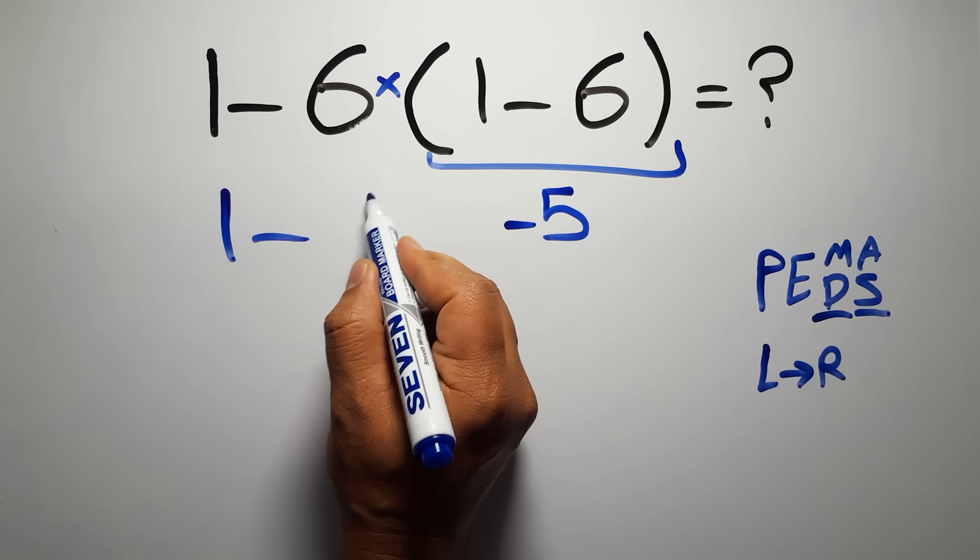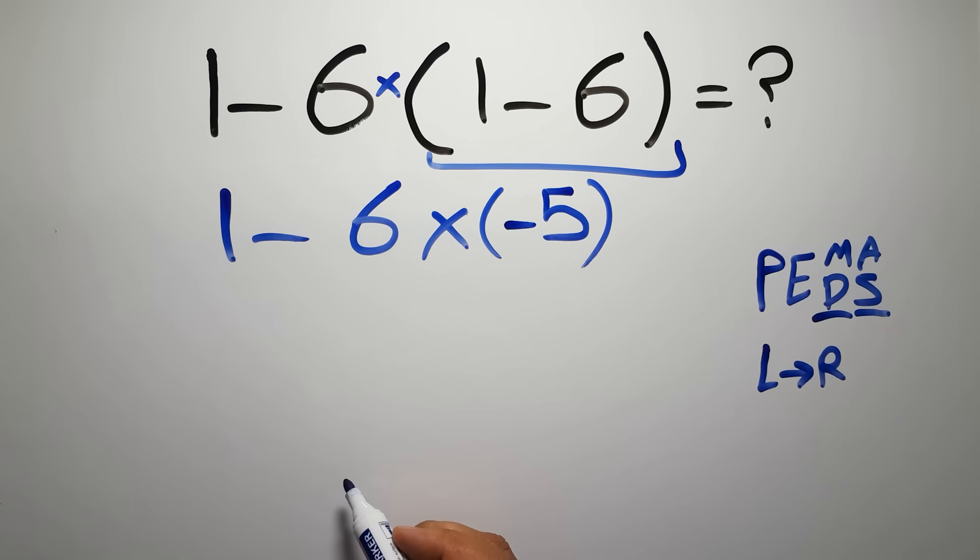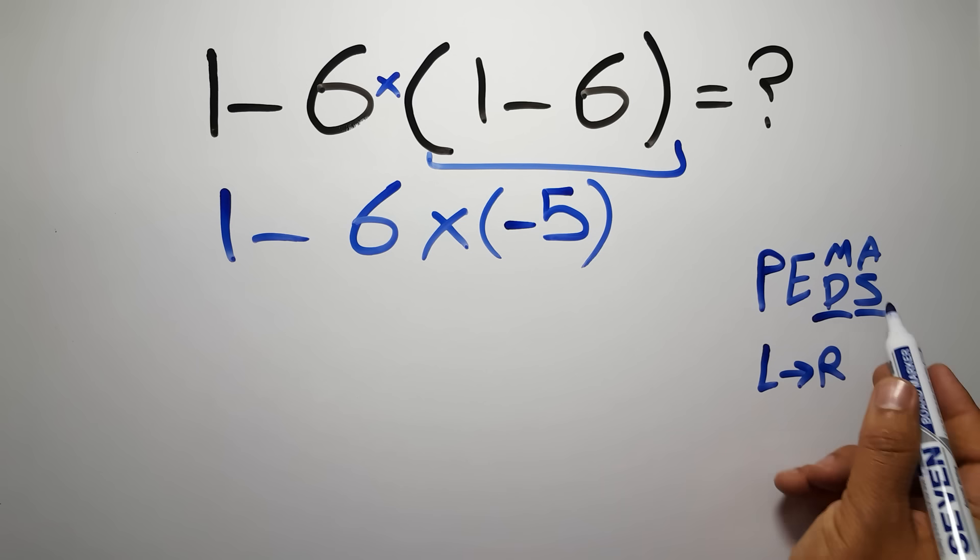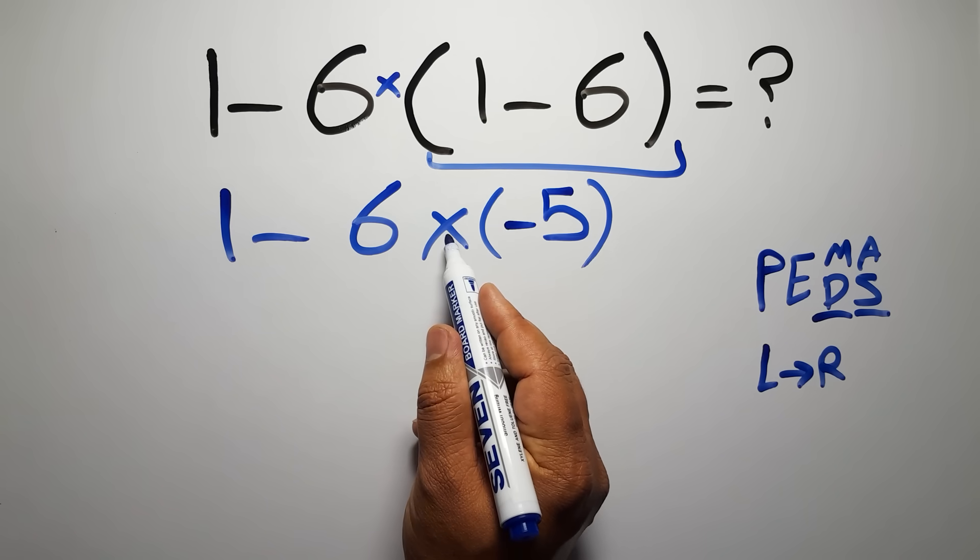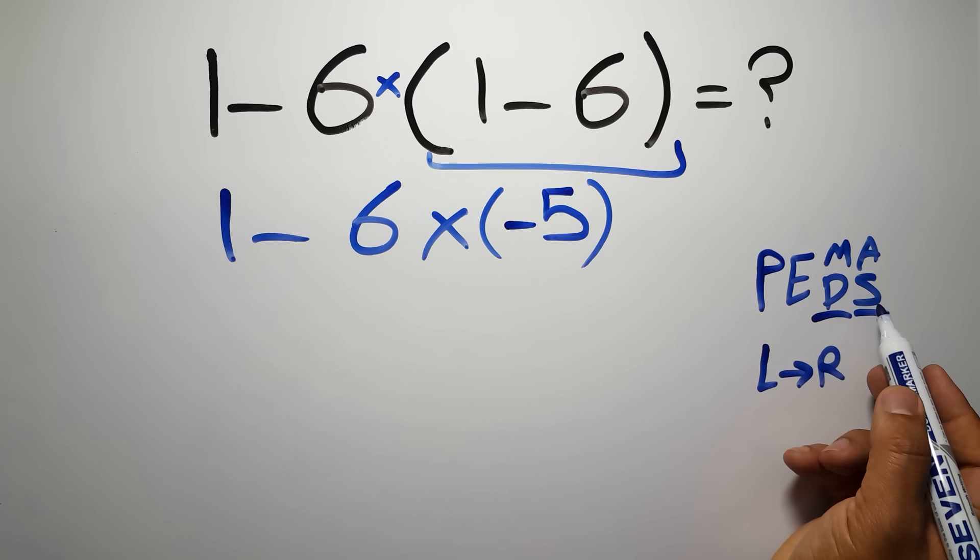So 1 minus 6 times negative 5. Now we have 1 subtraction and 1 multiplication. According to the PEMDAS, multiplication has higher priority than subtraction, because multiplication comes before subtraction.